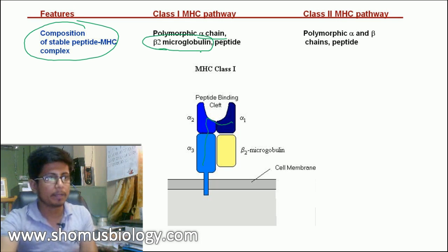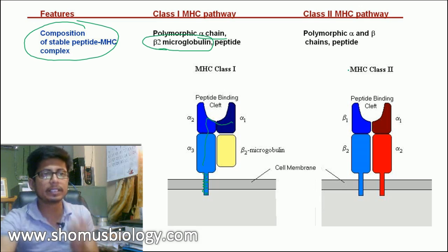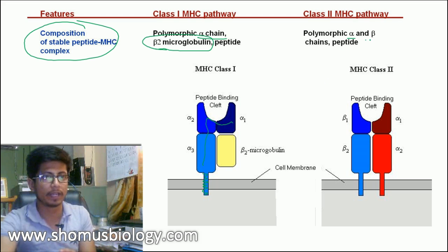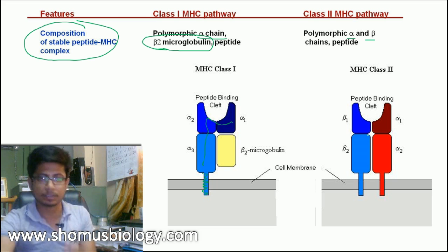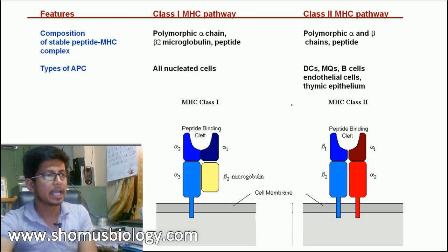In MHC class 1, only the alpha chain is anchored once in the membrane; the beta-2 microglobulin is not anchored. For MHC class 2, it is also polymorphic but has two complete chains — one alpha and one beta — and both are anchored in the membrane. In class 2, both chains are complete, unlike class 1 where only alpha is complete. Class 2 also has the peptide binding cleft where the processed antigen is showcased outside the cell.